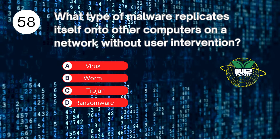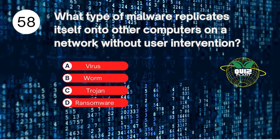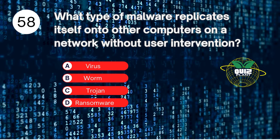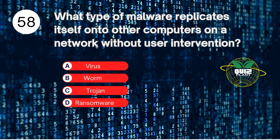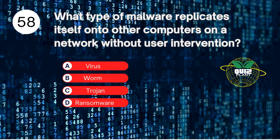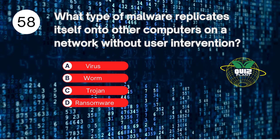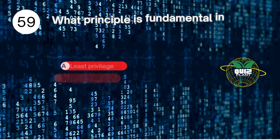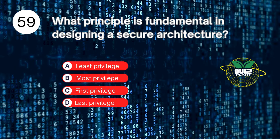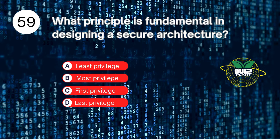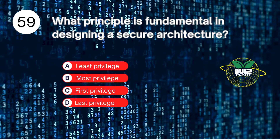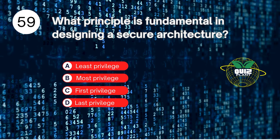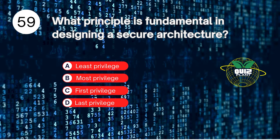Number 58. What type of malware replicates itself onto other computers on a network without user intervention? A. Virus. B. Worm. C. Trojan. D. Ransomware. The answer is B. Worm. Number 59. The answer is A. Least privilege.